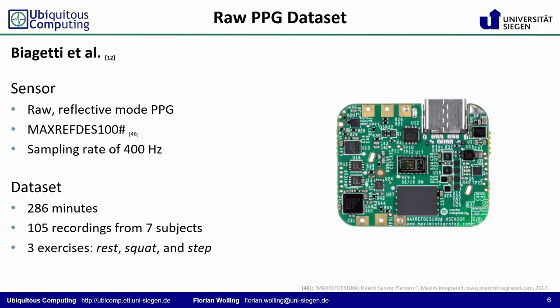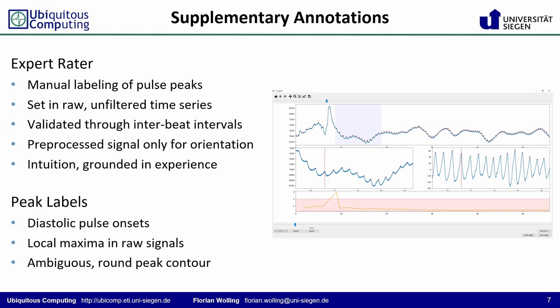Datasets of actual raw measurements are scarce. We finally found a dataset of raw reflective mode PPG that enables a benchmark of algorithms on a neutral basis. The dataset of Biagetti et al. from 2020 contains 286 minutes of measurements directly obtained from the analog sensor frontend, sampled at 400 Hz. Seven subjects perform three exercises: rest, squat, and step. Unfortunately, the dataset does not provide any ground truth information, so an expert rater was asked to manually label and validate the pulse peaks and the diastolic pulse onsets respectively.